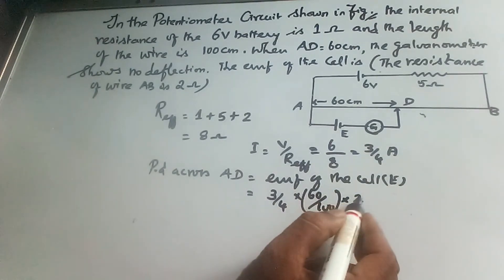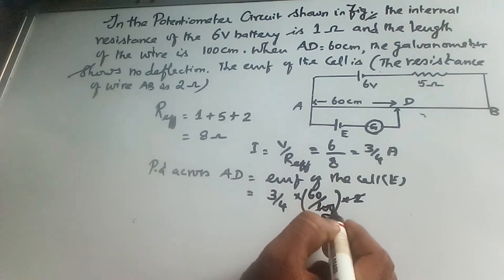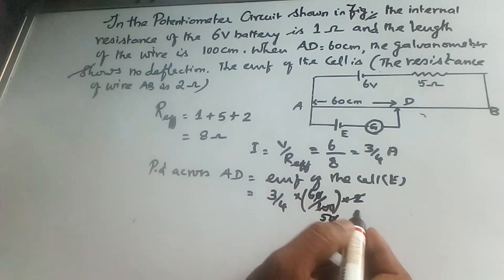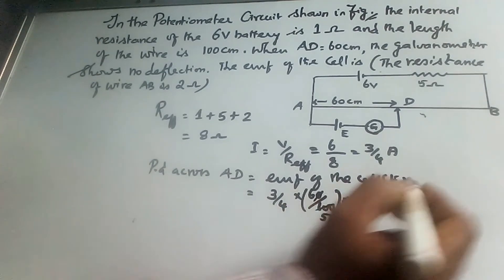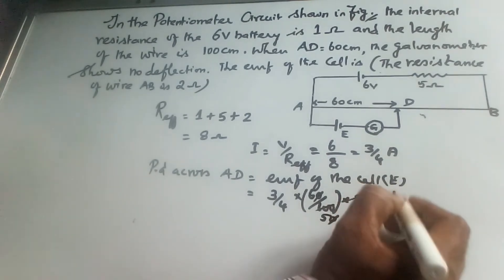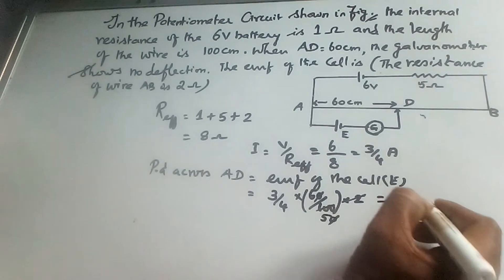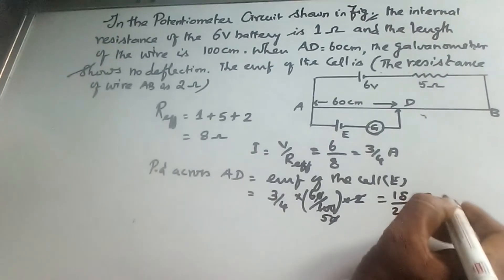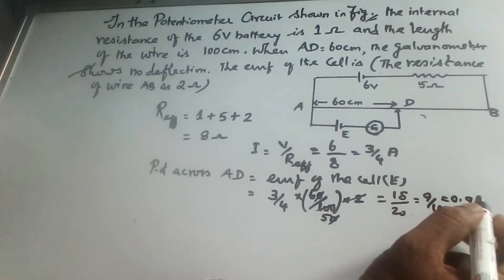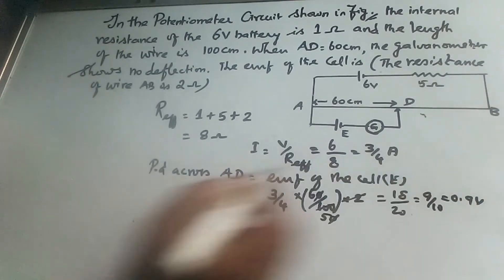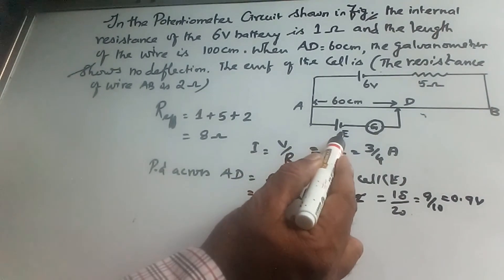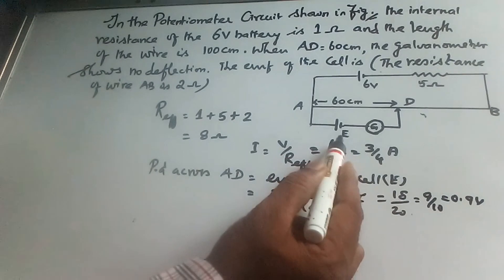The calculation gives 9 by 10, or 0.9 volt. Therefore the EMF of the cell is 0.9 volt.